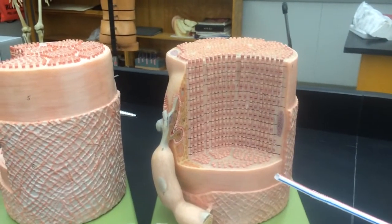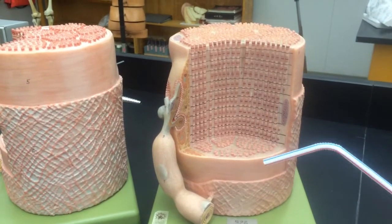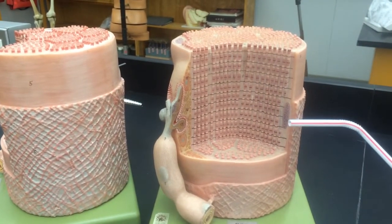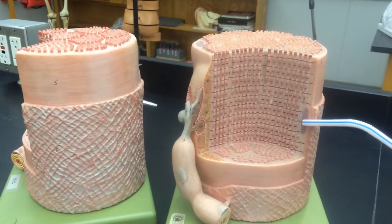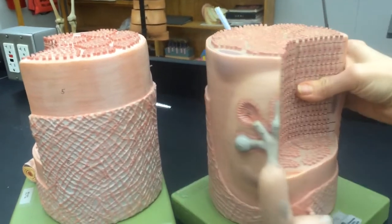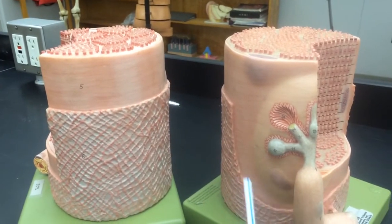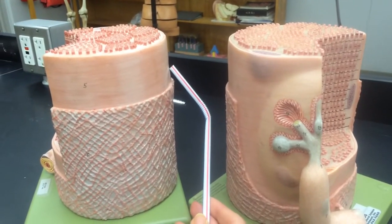This model represents a muscle fiber for skeletal muscle. One of the unique characteristics that makes skeletal muscle different from other muscle tissues is that it is multinucleated. You can see a nucleus here, here, here, and here. You can also see one over here on the other model.